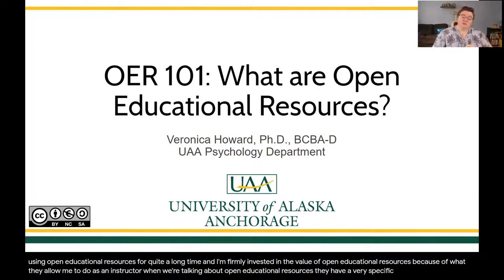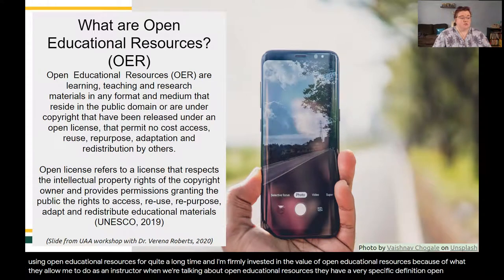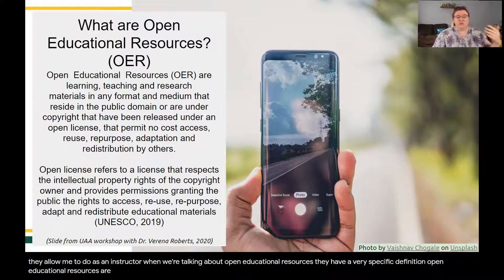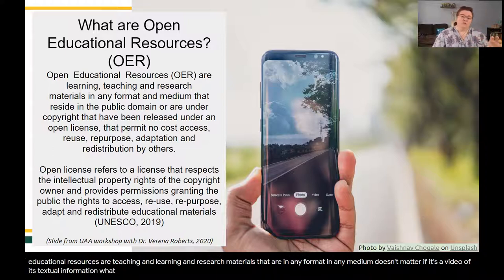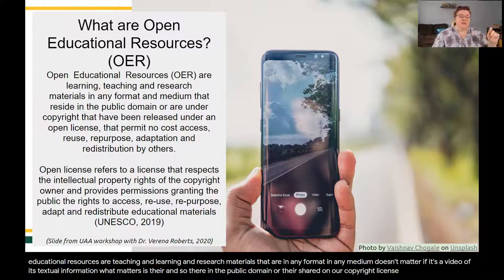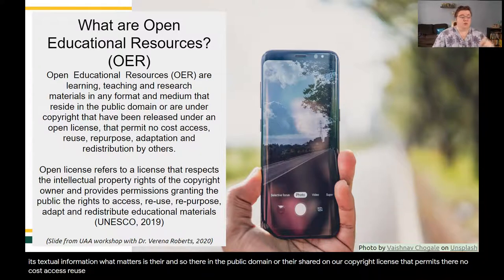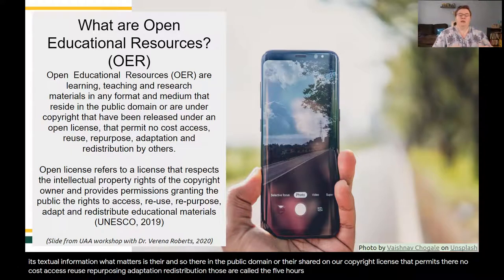When we're talking about open educational resources, they have a very specific definition. Open educational resources are teaching, learning, and research materials that are in any format, in any medium — it doesn't matter if it's a video or textual information. What matters is their license: they're in the public domain or shared under a copyright license that permits no-cost access, reuse, repurposing, adaptation, and redistribution. Those are called the five R's, and we'll come back to those in a second.